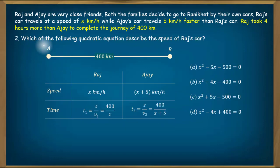Question number 2: Which of the following quadratic equations describes the speed of Raj's car? We have already calculated that Ajay's speed is x plus 5 km per hour. Since the distance to Raniket is 400 km, we can calculate the time. T1 equals distance by speed for Raj: 400 by x. T2, Ajay's time, is 400 by x plus 5.